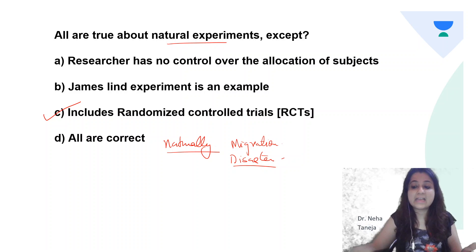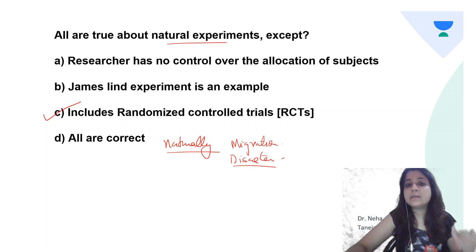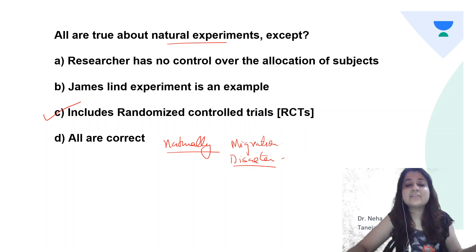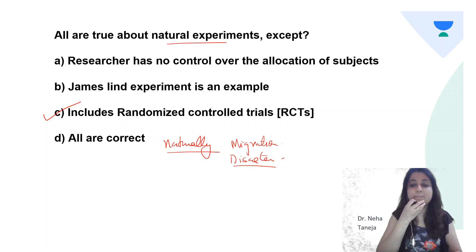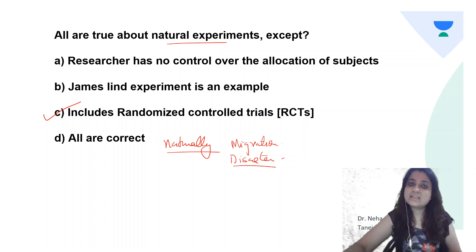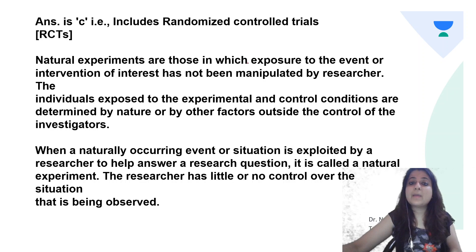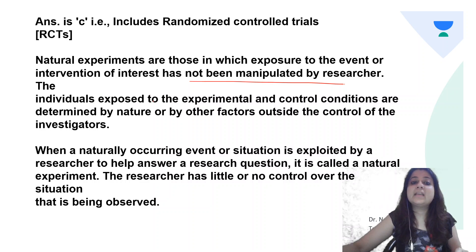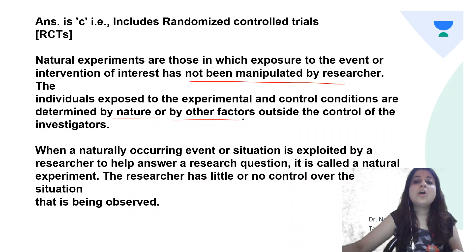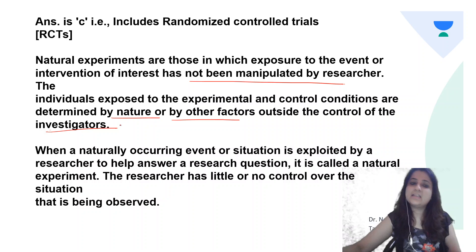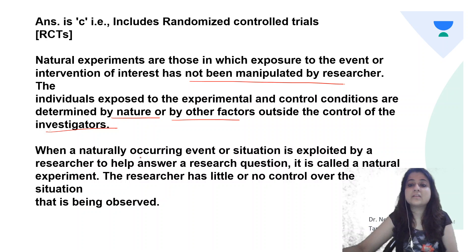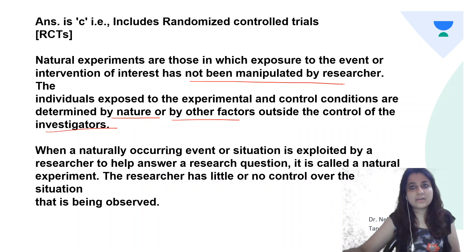In migration studies, the group that migrated and the group that did not can be studied for the effect of environmental and genetic behaviors. James Lind's experiment — where he studied that vitamin C can prevent scurvy — was a natural experiment. John Snow's experiment is also an example of a natural experiment. Natural experiments are those in which exposure has not been manipulated; the conditions are determined by nature or factors outside the control of investigators.